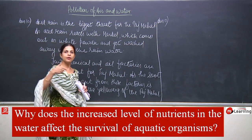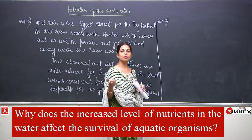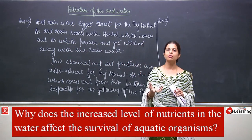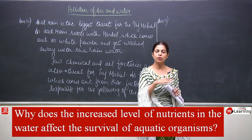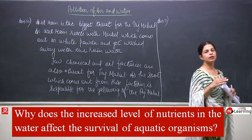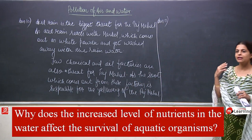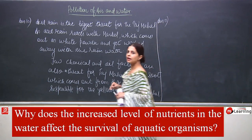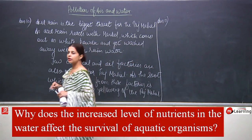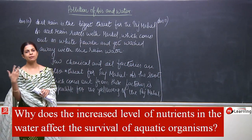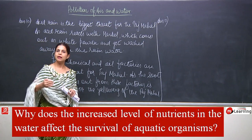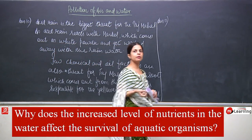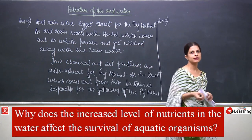When this water gets mixed with water bodies, the growth of algae increases — this is also known as a bloom of algae. The whole surface of the lake or river gets covered with algae. When this algae dies, decomposers come into action.